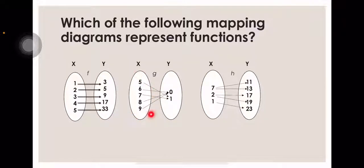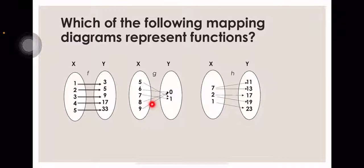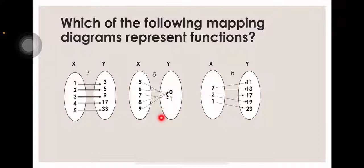The second diagram has inputs 5 and 7 as X values, and they both share the same output in Y, which is 1. So you can see that 5 and 7 map to the same value — there is only one output. Therefore, we call this many-to-1. When it is many-to-1, that is also a function.